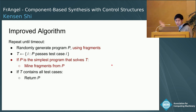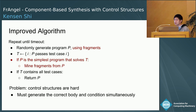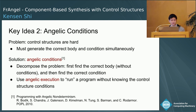This still has a problem, which is that control structures are hard. We need to generate the correct body and condition of the control structure simultaneously. We tackle this with key idea two: angelic conditions. Instead of requiring the body and condition to be correct simultaneously, we decompose this problem—we first find the correct body and then find the correct condition for that body. We use angelic execution to run a program even if we don't know what its control structure conditions should be.